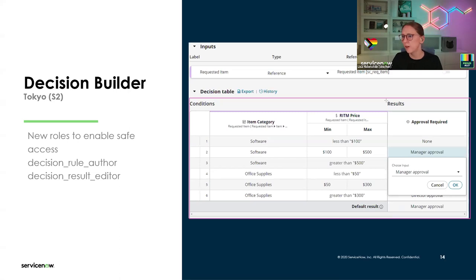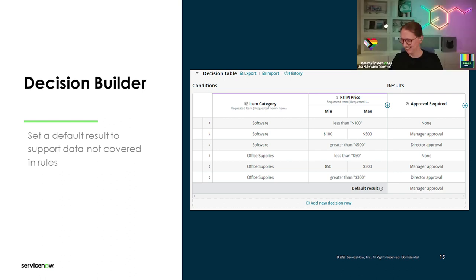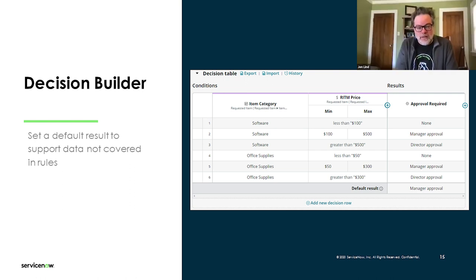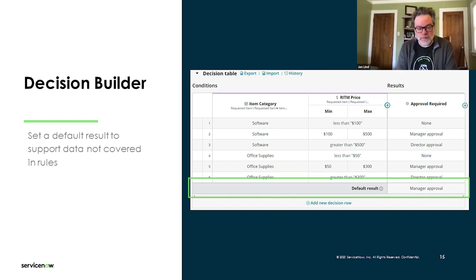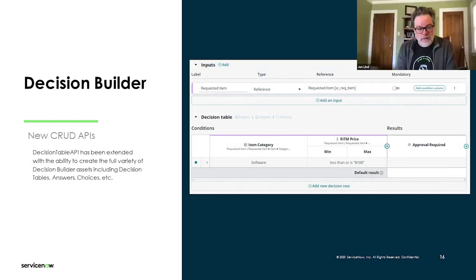Another Decision Builder improvement many developers immediately noticed was missing: the default results — essentially the 'else' case. This is now much simpler to implement. You can just turn on the default results option and that line will appear. The cool part is this is also available when called by API, so if you use decisions through the API you can also get that as a default result.